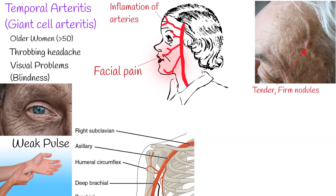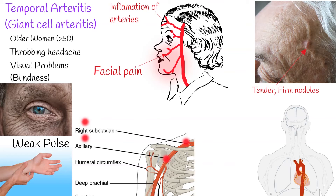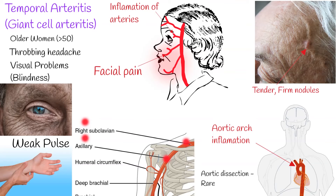Decreased pulses may be found throughout the body. Bruits may be heard over the subclavian and axillary arteries. The disease can affect the aortic arch and its branches, and can lead to aortic dissection, though fortunately this presentation is rare. More commonly, the disease affects the intracranial arteries.